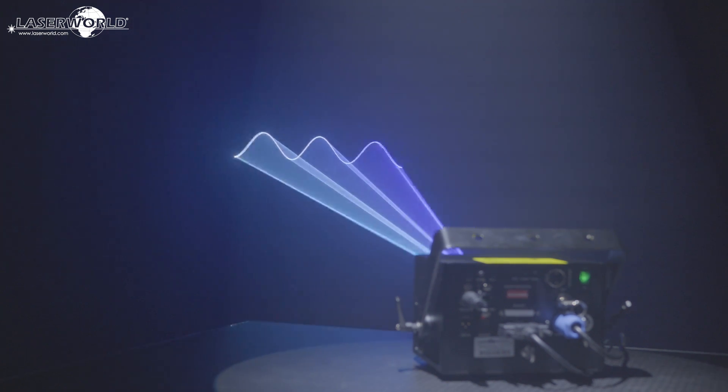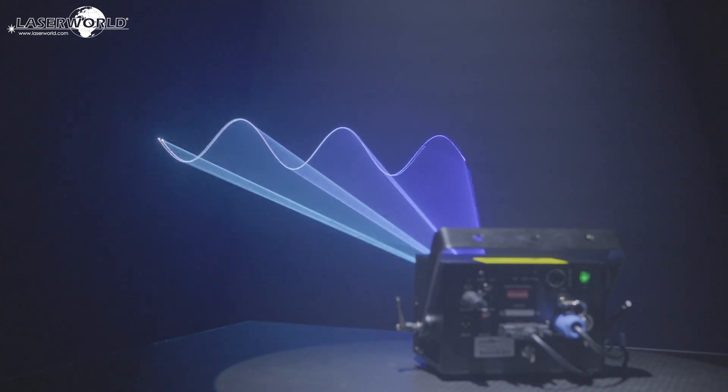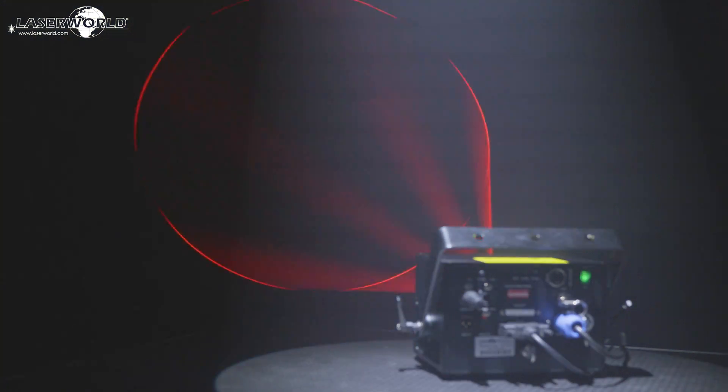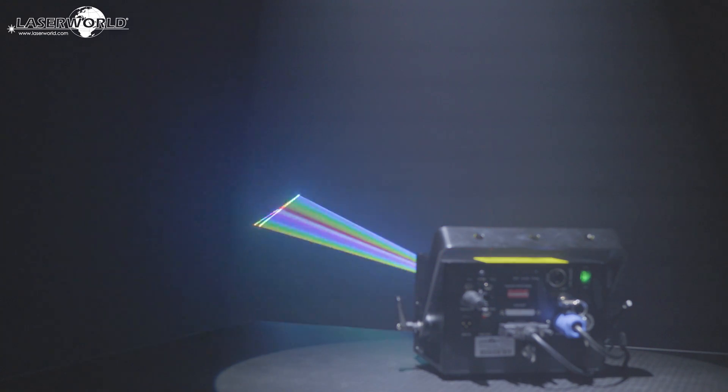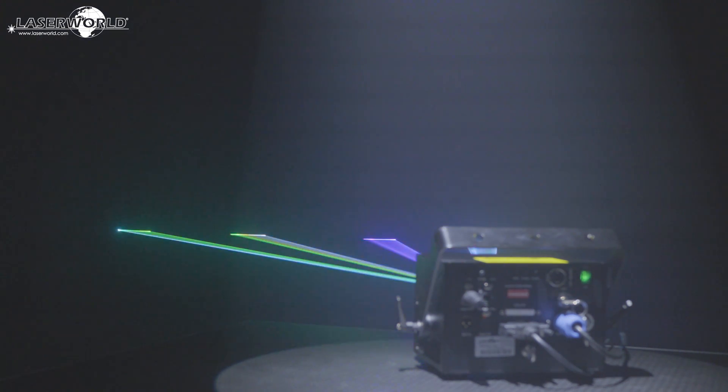The LaserWorld DS1000RGB MK3 has a scan speed of 40 kpps at 8 degrees ILDA and thus is graphics capable too. The DS1000RGB MK3 has extremely sharp, intense beams with a beam diameter of 3 millimeters and a very low divergence of 0.9 milliradians.